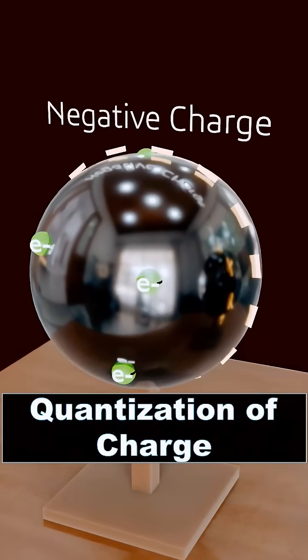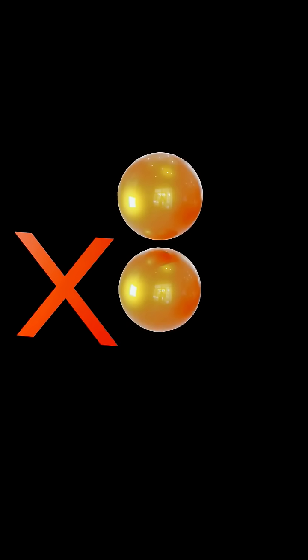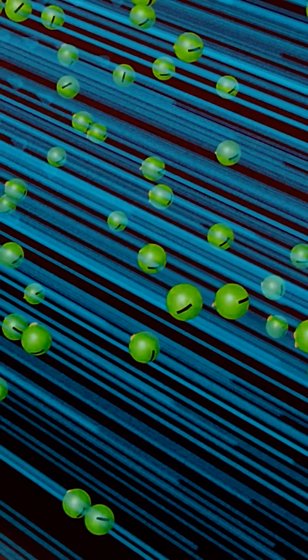This is called the quantization of charge. You can have 1E, 2E, 3E, but never 1.5E or 2.7E.